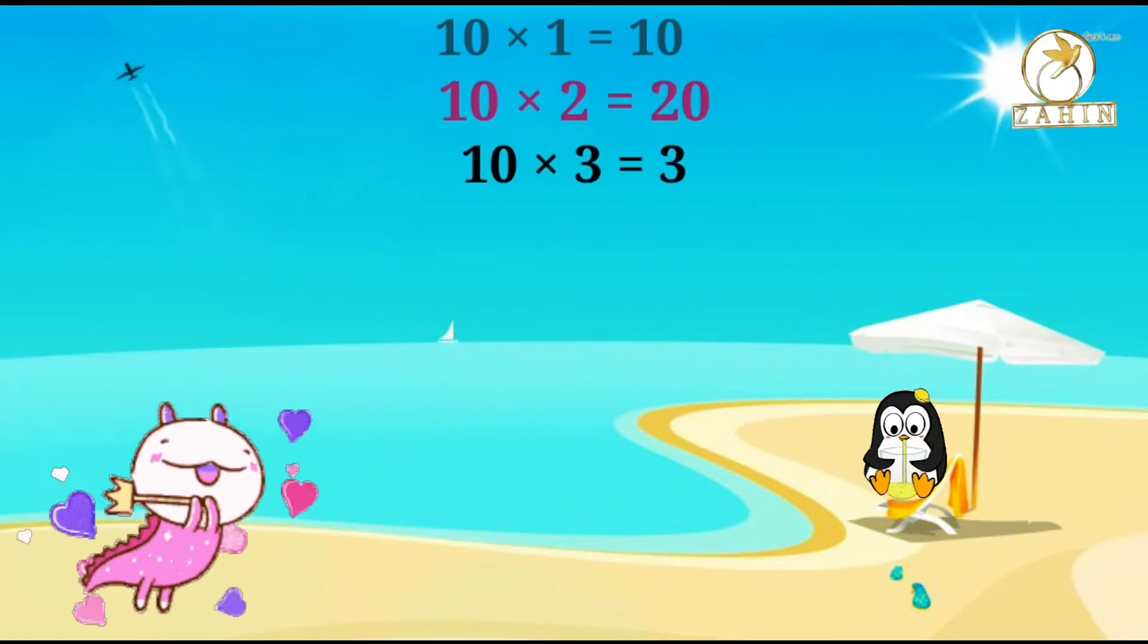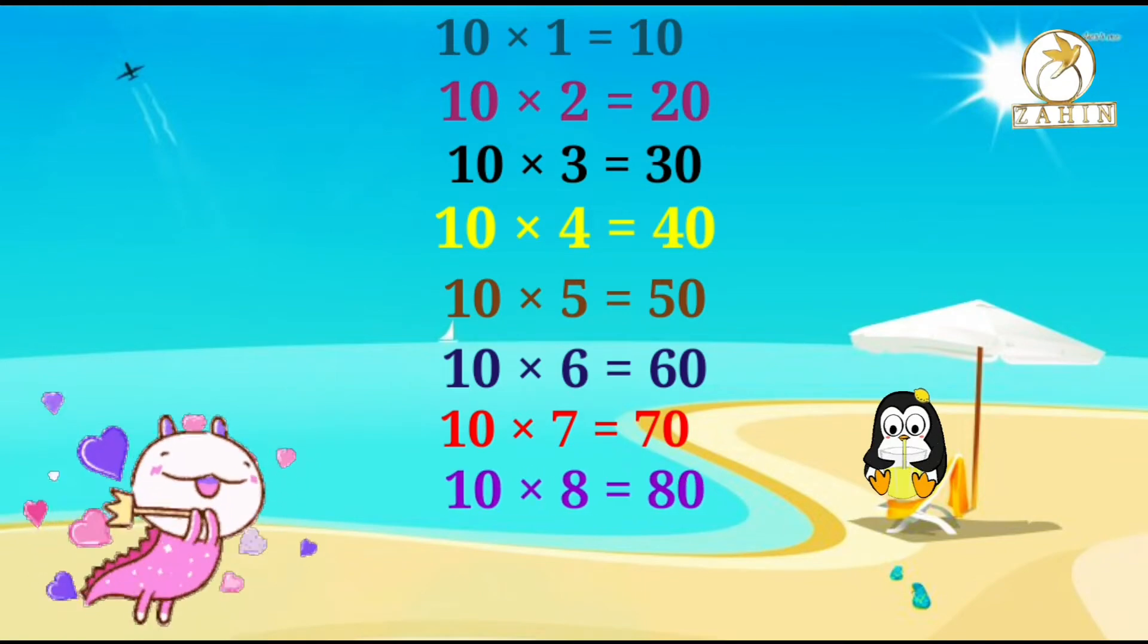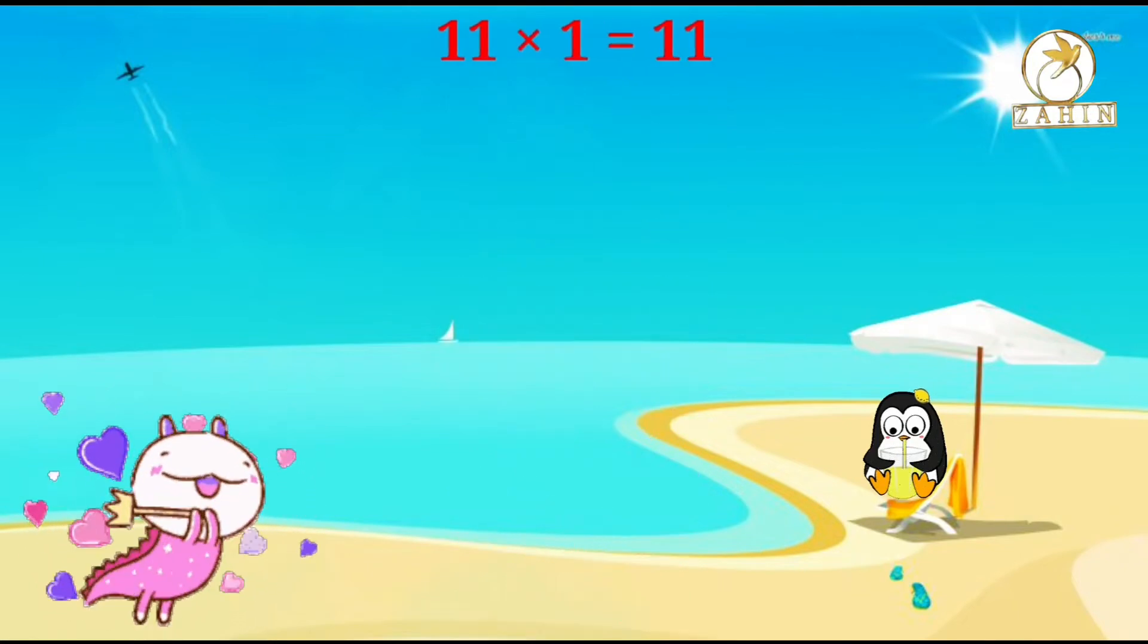10 times 2 equals 20, 10 times 3 equals 30, 10 times 4 equals 40, 10 times 5 equals 50, 10 times 6 equals 60, 10 times 7 equals 70, 10 times 8 equals 80, 10 times 9 equals 90, 10 times 10 equals 100. 11 times 1 equals 11.